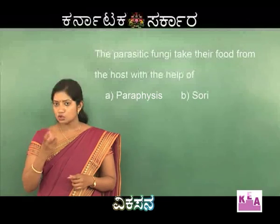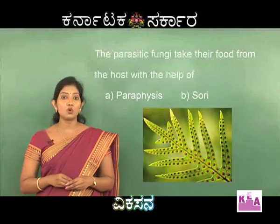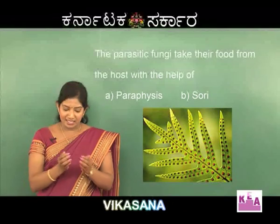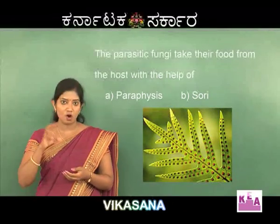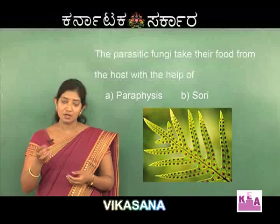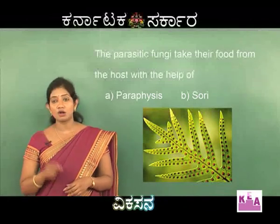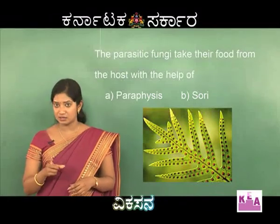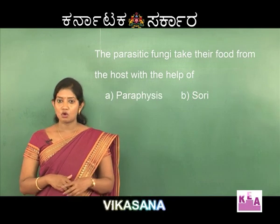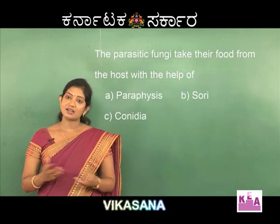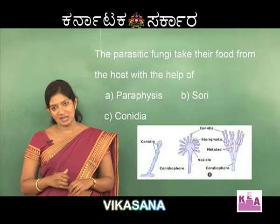Sorae — a sorus is a cluster or group of sporangia, which are bags consisting of spores. So a cluster of sporangia forms what is called a sorus; the plural is sorae. Conidia are nothing but the asexual spores produced by fungi.